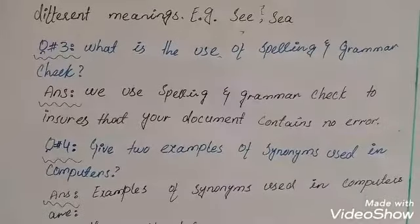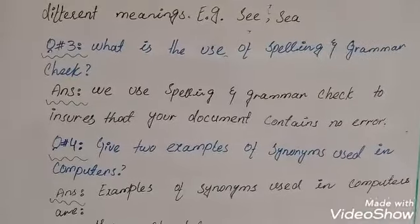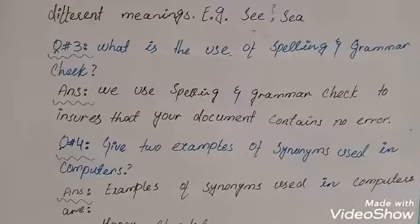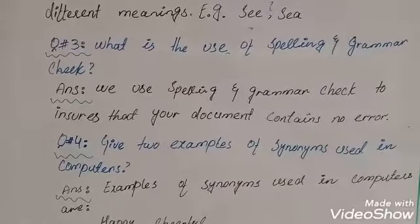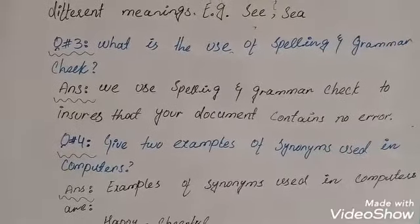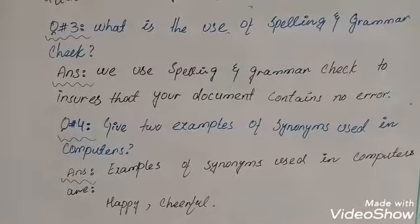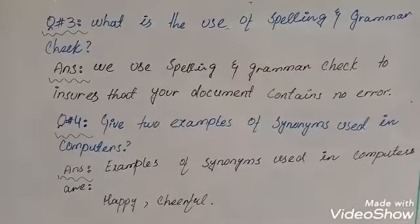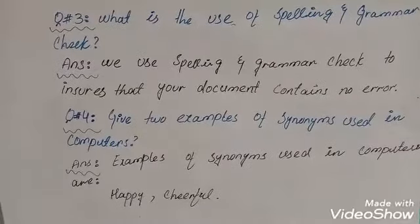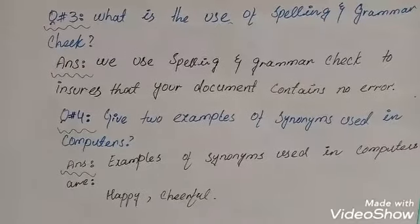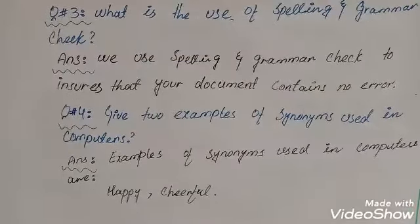Question number three: what is the use of spelling and grammar check? Answer: we use spelling and grammar check to ensure that your document contains no errors. Question number four: give two examples of synonyms used in computers. Answer: examples of synonyms used in computers are happy and cheerful.